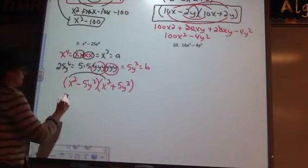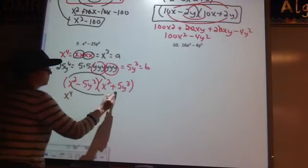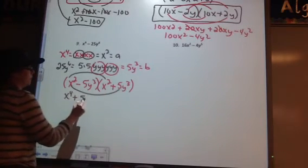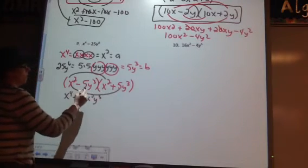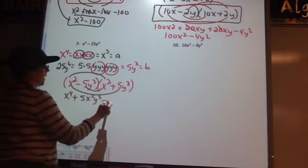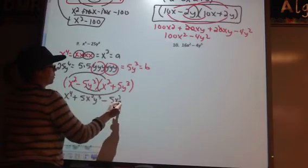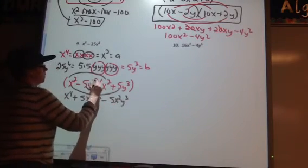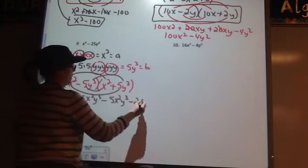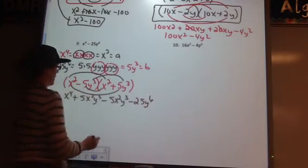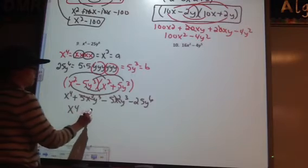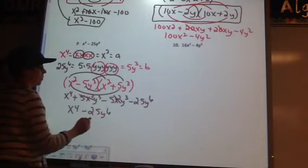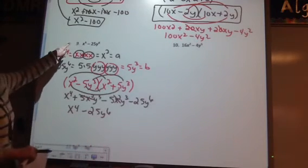So I have x squared times x squared. X squared times 5y cubed. Negative 5x squared y cubed. Negative 25y to the 6th. These cancel out. So I end up with x to the 4th minus 25y to the 6th. Which is what I started with.